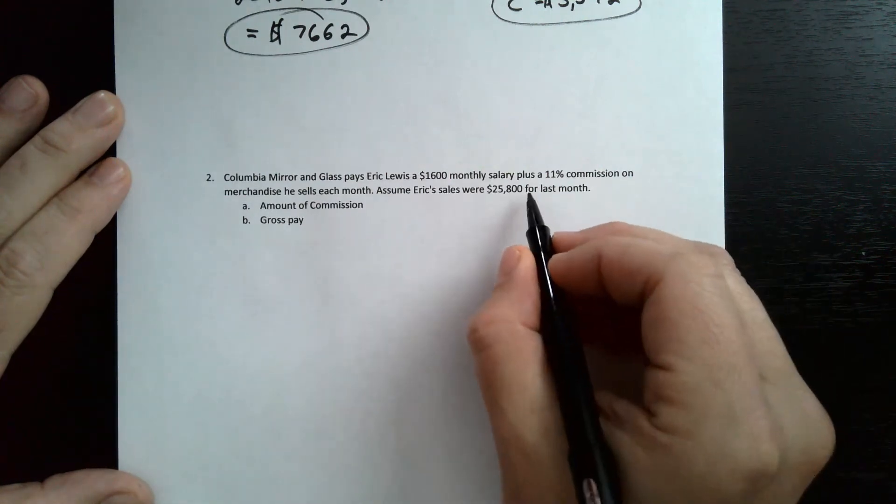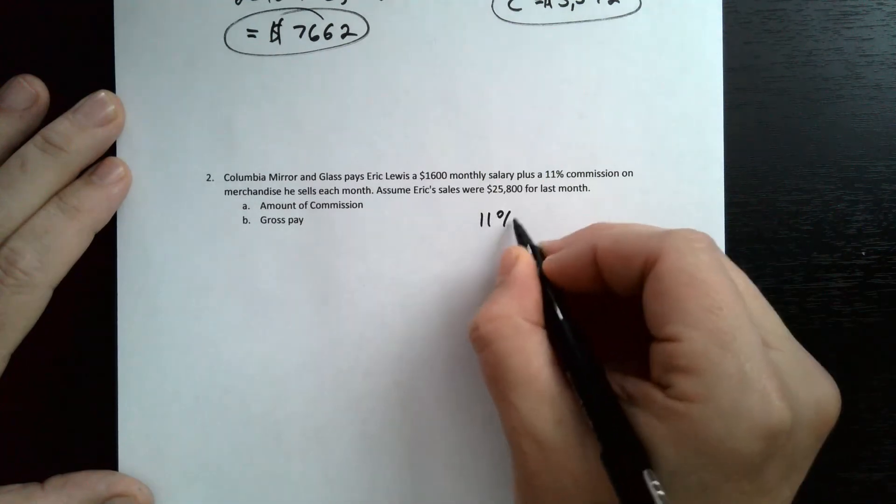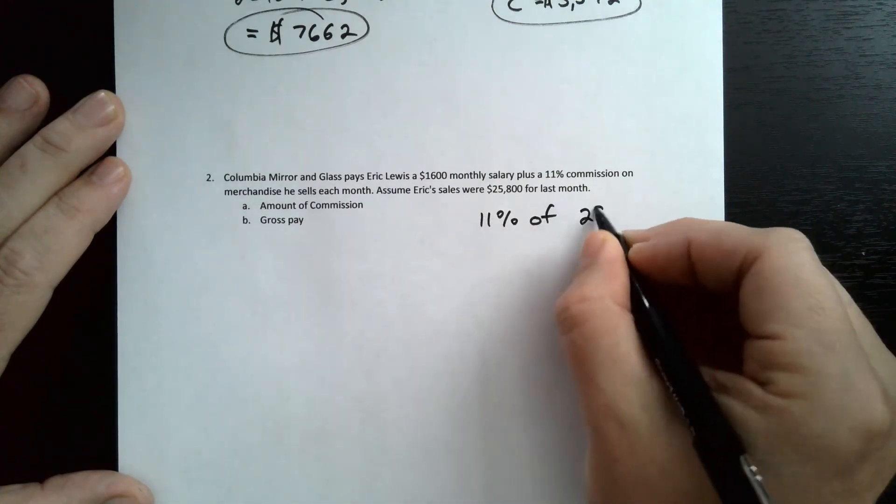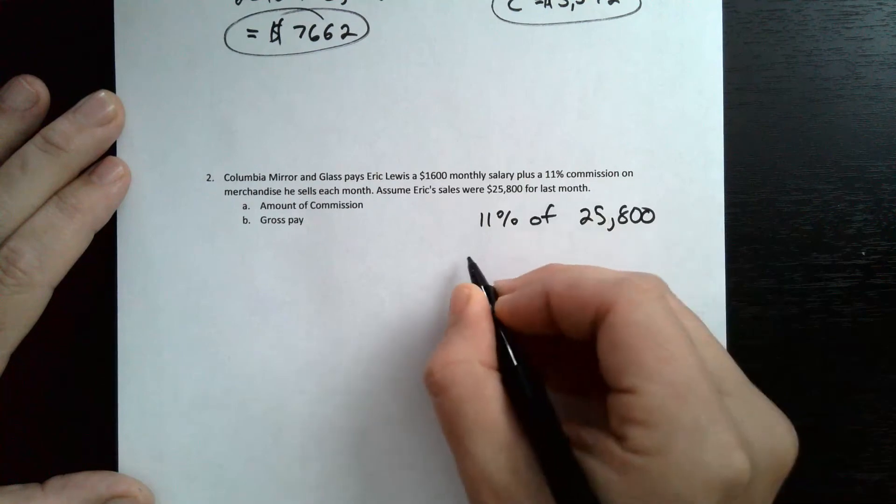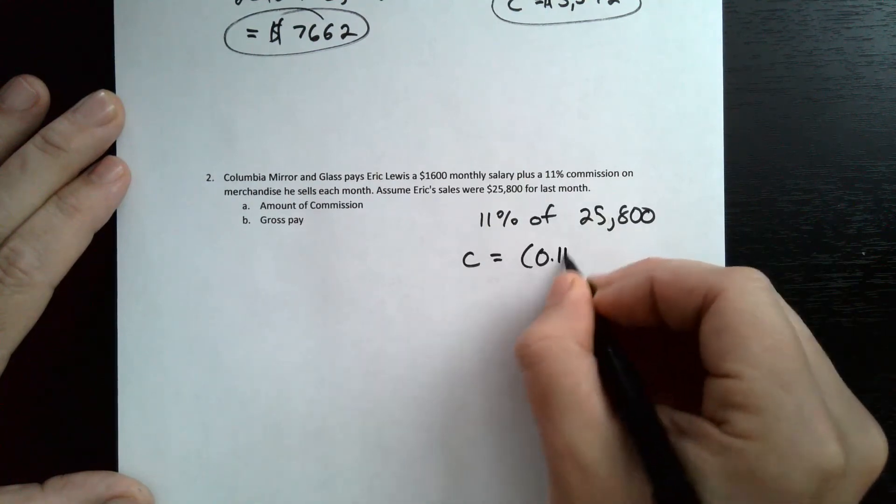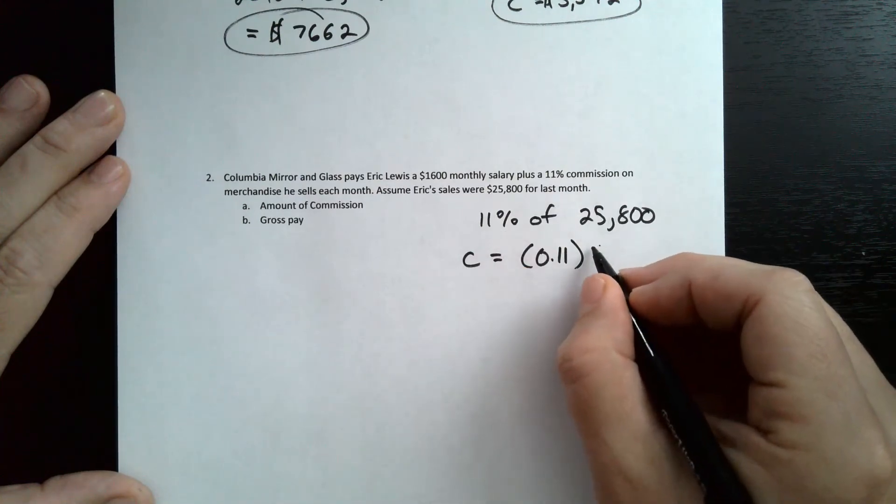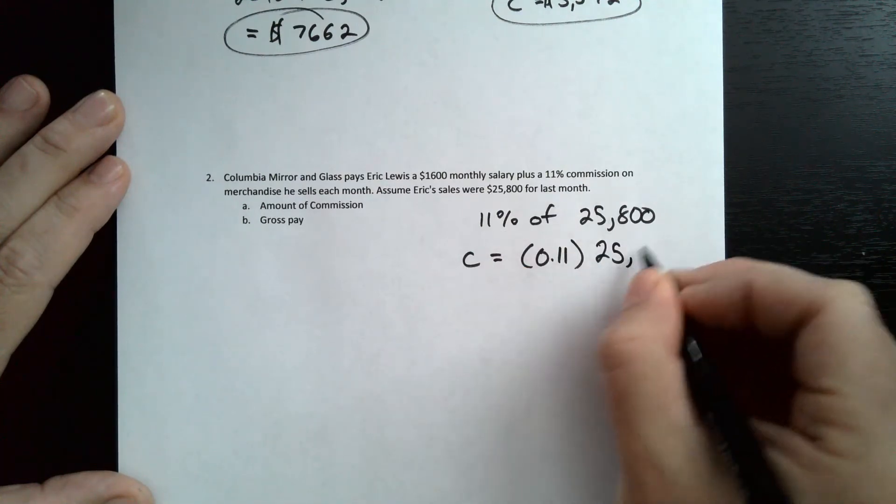Again, we need to figure out how much Eric made in commission. So that would be 11% of $25,800. So that will be C is equal to 0.11. That's writing 11% as a decimal, times $25,800.